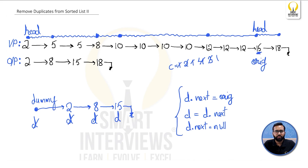The logic is very simple and straightforward: start with a dummy node, iterate through the linked list, count repetitions for each node, and if a node is repeated only once add it to the output linked list, storing the current node in 'original' so it can be appended easily. Pause the video here and try to convert this logic into code in your language of choice.